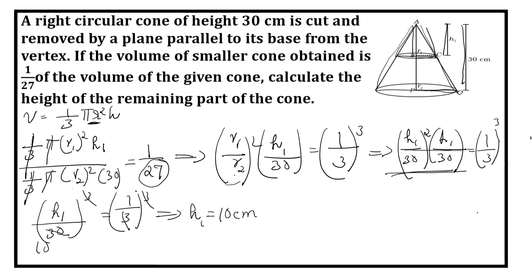If this is 10 cm, this is equal to 30 minus 10. So height of the remaining part is equal to 30 minus 10, that is equal to 20 cm. This is the answer.